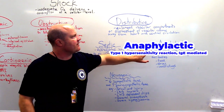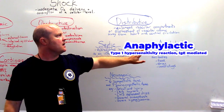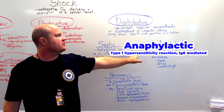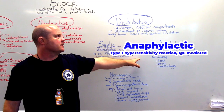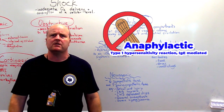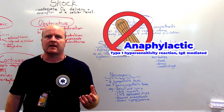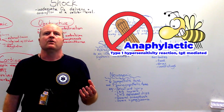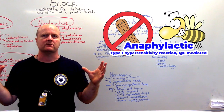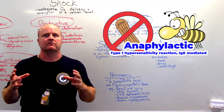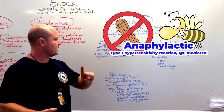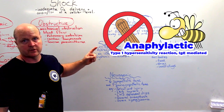Anaphylactic — a type 1 hypersensitivity reaction mediated by IgE antibodies. This is a peanut allergy or a bee sting allergy, where we get this hypersensitive response with massive amounts of vasodilation. Not awesome.